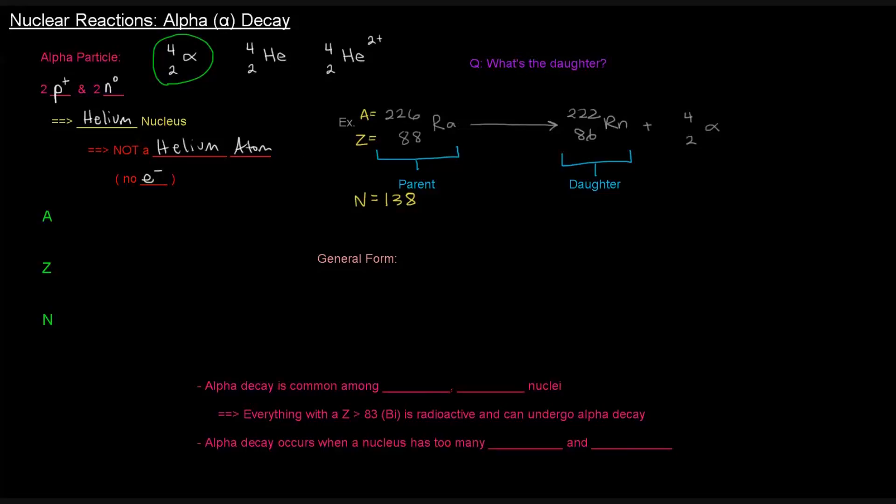Let's think about what happens to the A, the Z, and the N. We can see here that the A dropped by 4 from 226 to 222, so it decreased by 4. What happened to the Z? Went from 88 to 86, dropped by 2. What happened to the N? We didn't show that, so let's show that here. What is the N here equal?